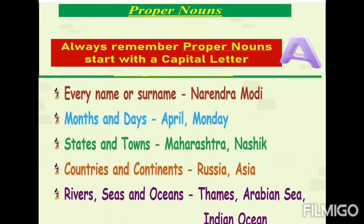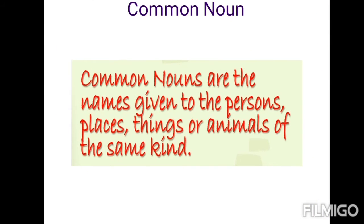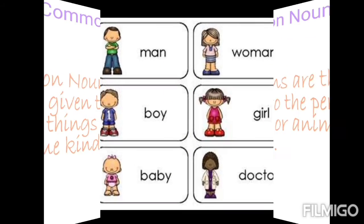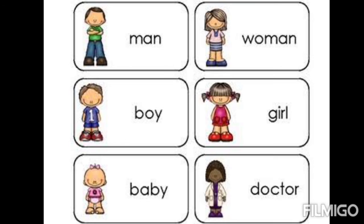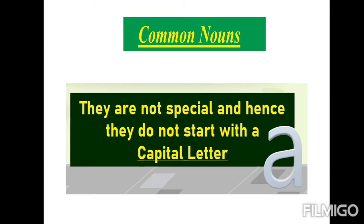Don't forget — proper nouns always start with a capital letter. Now let's see about common nouns. Common nouns are the names given to persons, places, things, or animals of the same kind. For example: man, woman, boy, girl, baby, doctor. These names indicate the same kind. Common nouns are not special, so they do not start with a capital letter.